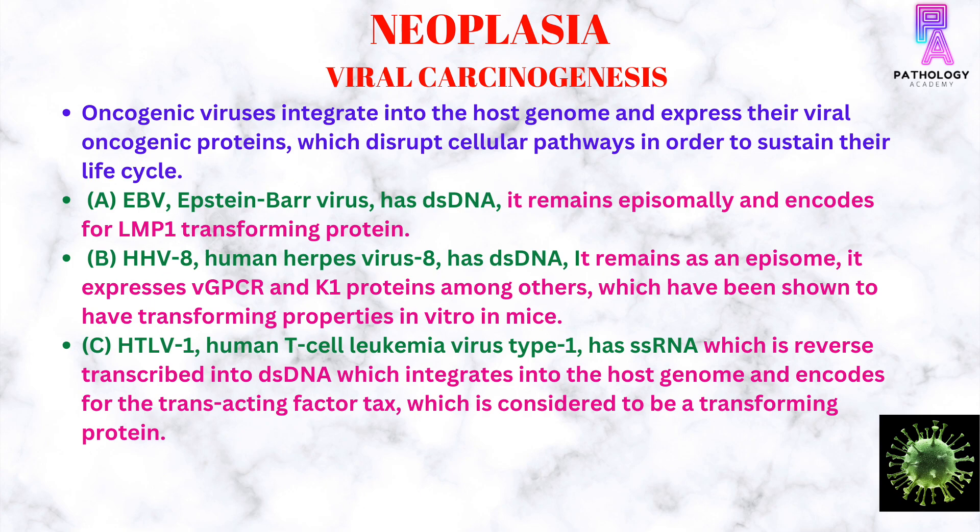The oncogenic virus integrates into the host genome and expresses viral oncogenic proteins, which disrupt cellular pathways in order to sustain their life cycle. Epstein-Barr virus, which has double-stranded DNA, remains episomally and encodes for LMP-1 transforming protein. Human herpesvirus-8 has double-stranded DNA, which remains as an episome and expresses vGPCR and K-1 proteins, among others, which have been shown to have transforming properties. HTLV-1, or human T-cell leukemia virus type 1, has single-stranded RNA, which is reverse transcribed into double-stranded DNA and then integrates into the host genome and encodes for a transacting factor TAX, which is considered to be a transforming protein.